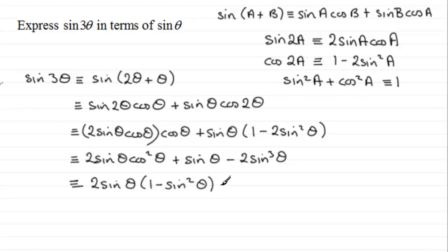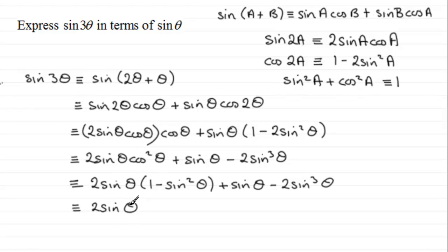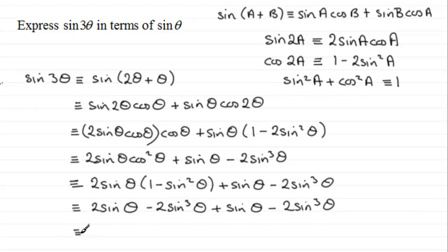Then we still have +sin(θ) and -2sin³(θ) from before. Expanding the bracket: 2sin(θ) × 1 = 2sin(θ), and 2sin(θ) × (-sin²θ) = -2sin³(θ). Grouping terms: sin(θ) terms give 2sin(θ) + sin(θ) + sin(θ) = 3sin(θ); sin³(θ) terms give -2 - 2 = -4sin³(θ).